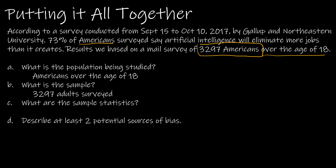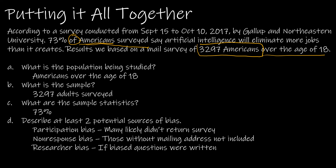What are the sample statistics? The sample statistics are statistics related to the sample, and that's the 73% — we know that because it says 'of Americans surveyed,' so it's not of the population, it's of the sample. Now describe at least two potential sources of bias. Participation bias: many likely didn't return the survey. Non-response bias: those without mailing addresses were not included. Researcher bias: if biased questions were written. We don't know any of that for sure, but those are potential sources.